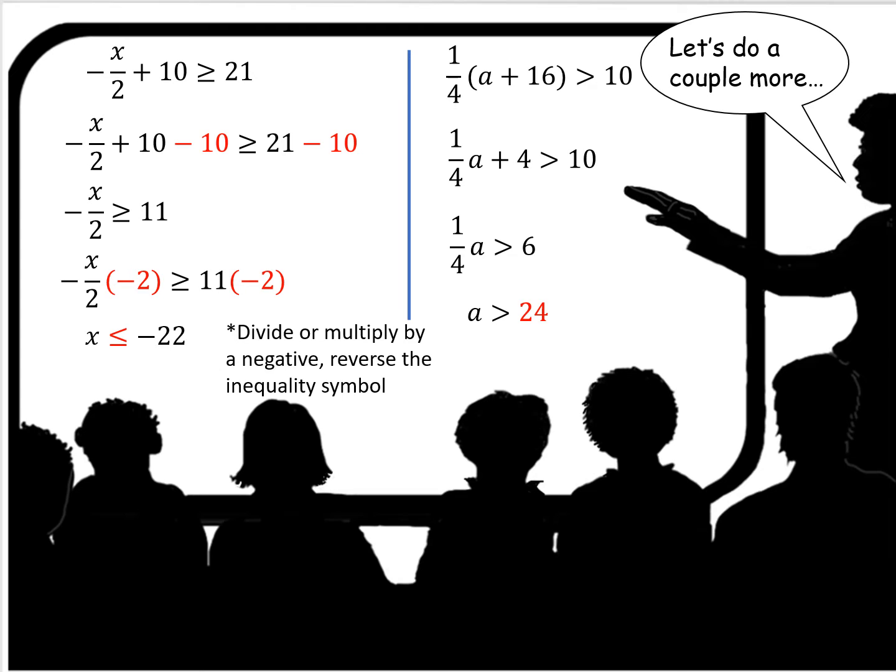Our second example, we're going to have to use the distributive property and distribute 1 fourth over the a and over the 16. So we get 1 fourth a and then 1 fourth times 16 is 4 greater than 10.